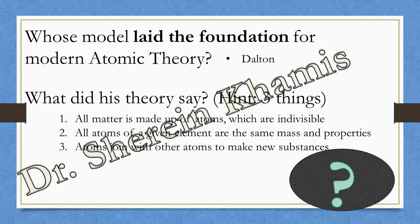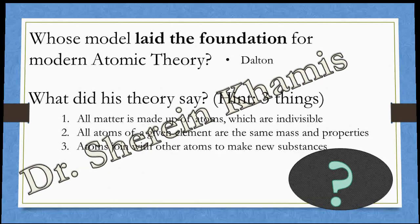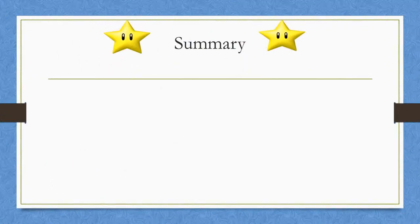The first point: all matter is made up of atoms, which are indivisible. The second: all atoms of a given element have the same mass and properties. The last one: atoms join with other atoms to make what we call new substances or compounds.